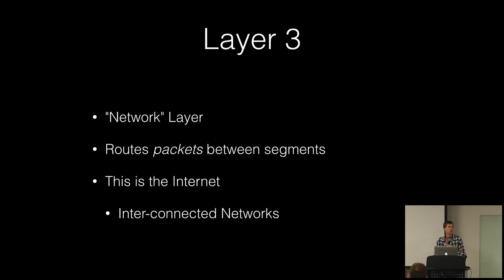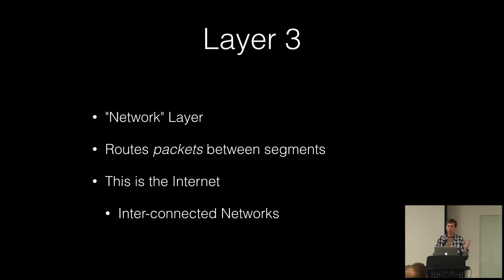At layer three, the only new concept here is that this is where the internet begins. The internet is an interconnected series of networks. From here on, we're talking not just about things between this closet and that closet, but things at a global scale — you need IP or networking protocols to communicate with devices across further distances.